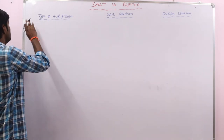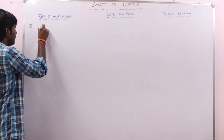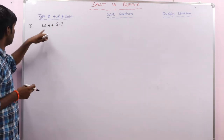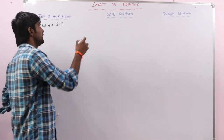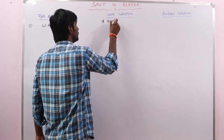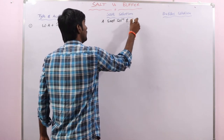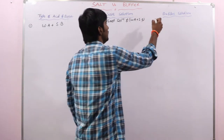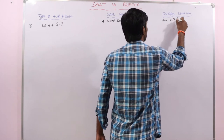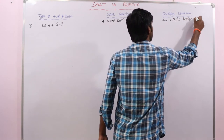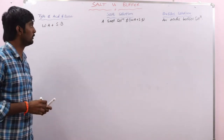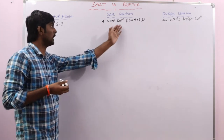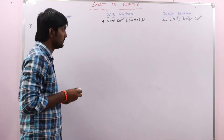There are two cases. First, when a weak acid is mixed with a strong base, either a salt solution of the weak acid is formed, or an acidic buffer solution is formed. Let us see in which case a salt solution is formed and in which case a buffer solution is formed.